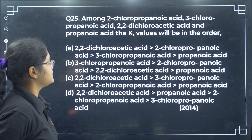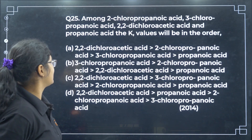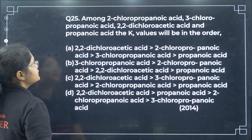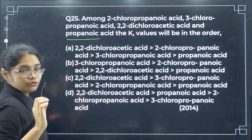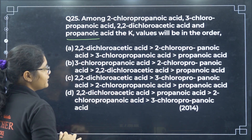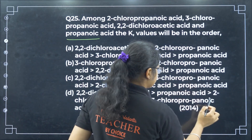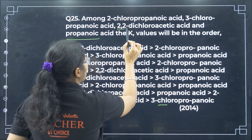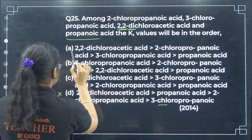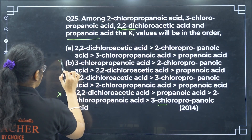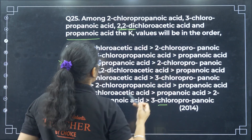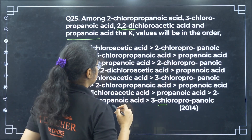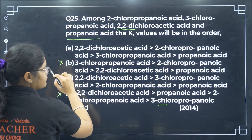Among 2-chloropropanoic acid, 3-chloropropanoic acid, 2,2-dichloroacetic acid and propanoic acid, the Ka values order: propanoic acid has no electron withdrawing group so it is the least acidic. 2,2-dichloroacetic acid has two chlorine atoms so it is most acidic. 2-chloropropanoic acid has chlorine closer to the carboxyl group than 3-chloropropanoic acid, so its effect is stronger. Option A is the answer.